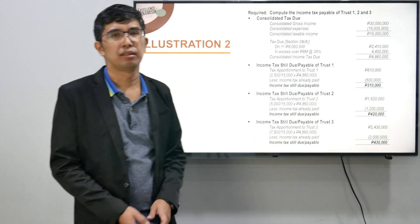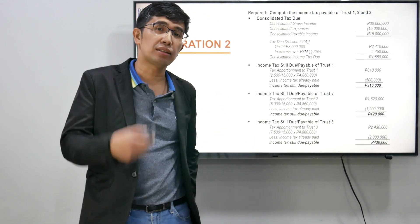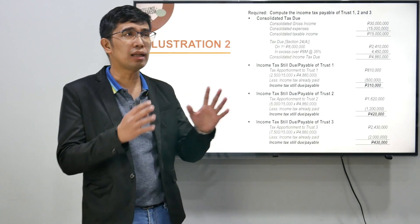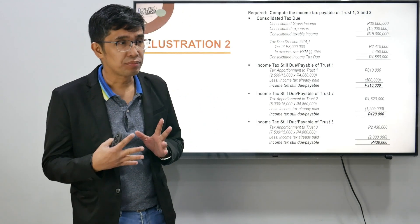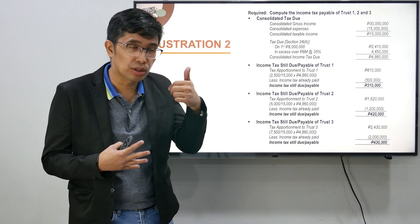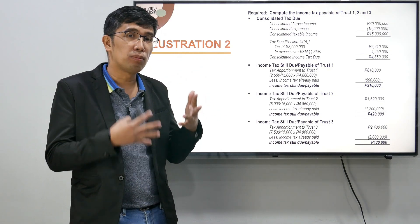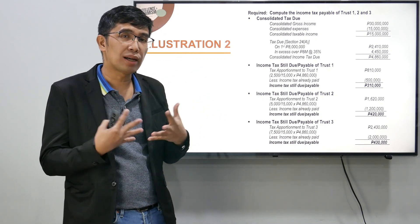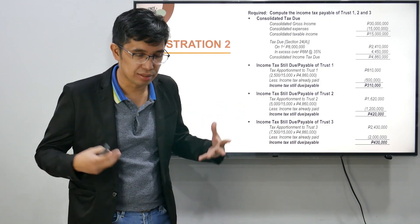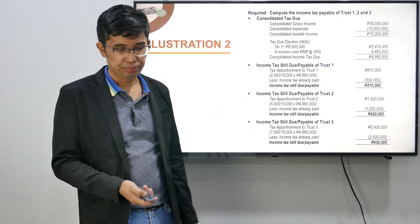Let's distribute yung 4,860,000. Net income ng trust 1 ay 2.5 — numerator mo; trust 2 net income niya 5 million; trust 3 net income 7.5. So net income ng trust over net income ng lahat ng trust: 2.5 over 15, 5 over 15, 7.5 over 15. I-multiply natin sa income tax due na 4,860,000. Therefore ang tamang income tax ng trust 1 ay 810,000; trust 2 ay 1,620,000; and trust 3 ay 2,430,000. This will apply only kapag same grantor, same beneficiary, pero more than one trust agreement ang na-create para sa beneficiary.